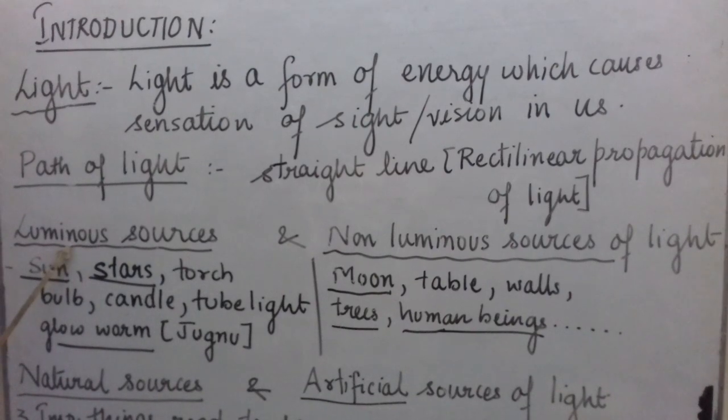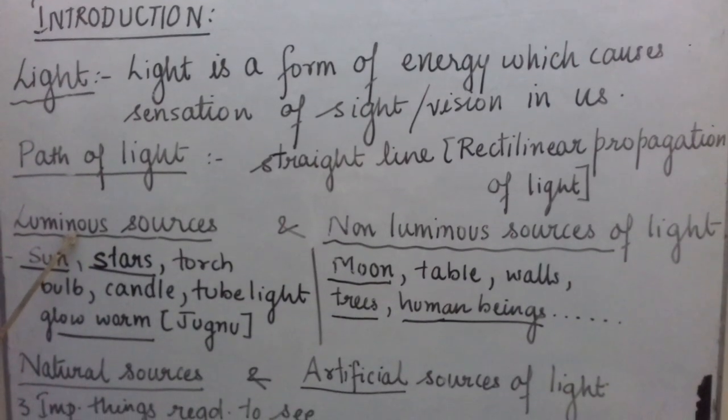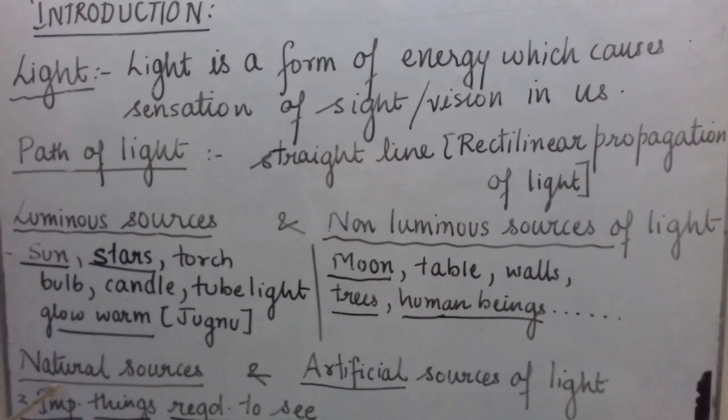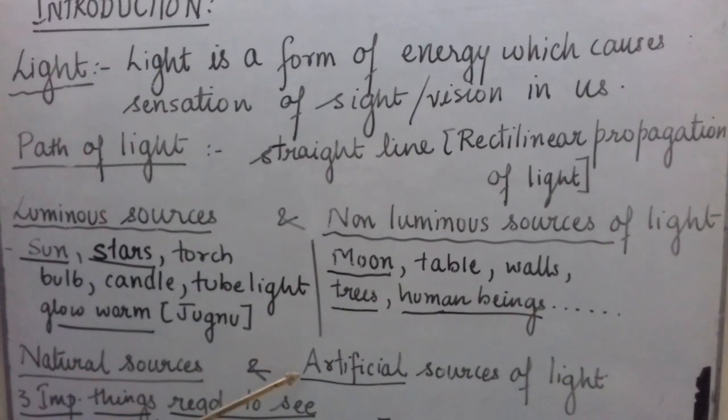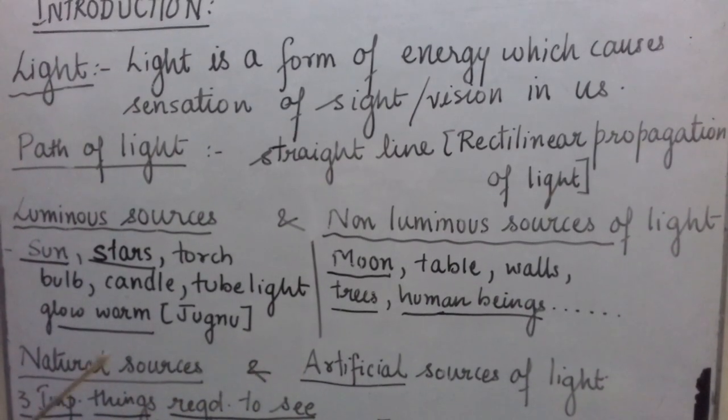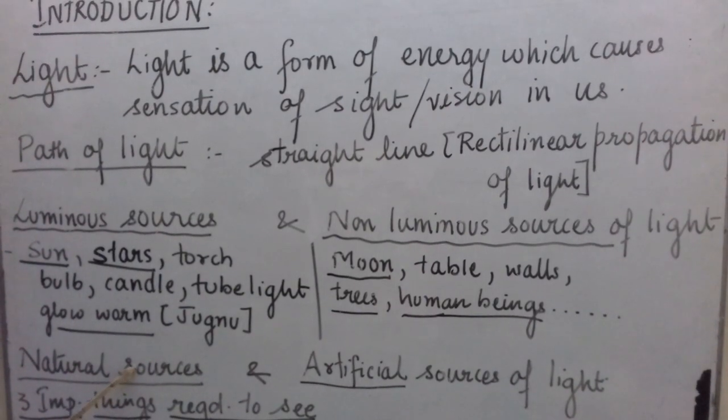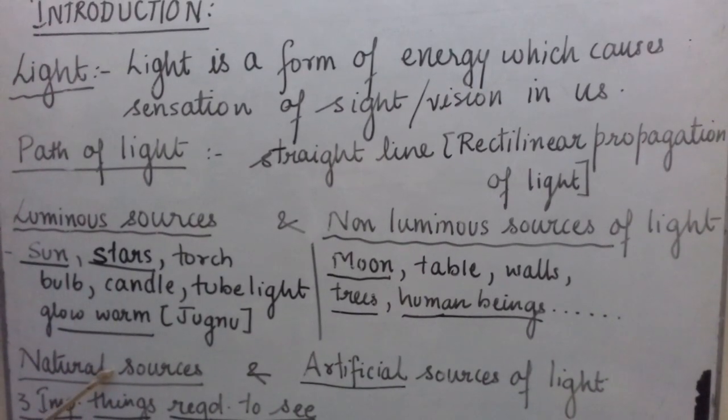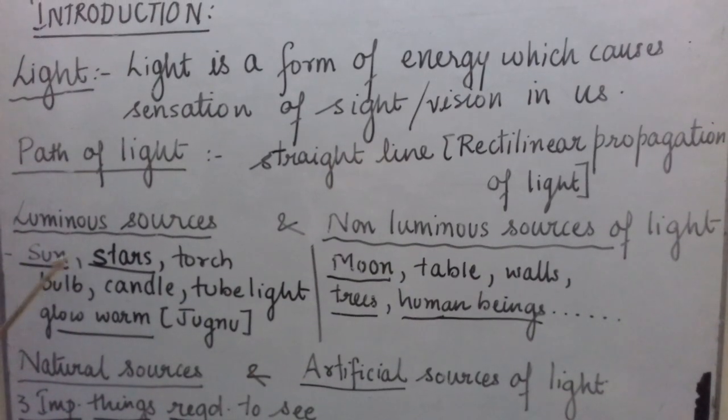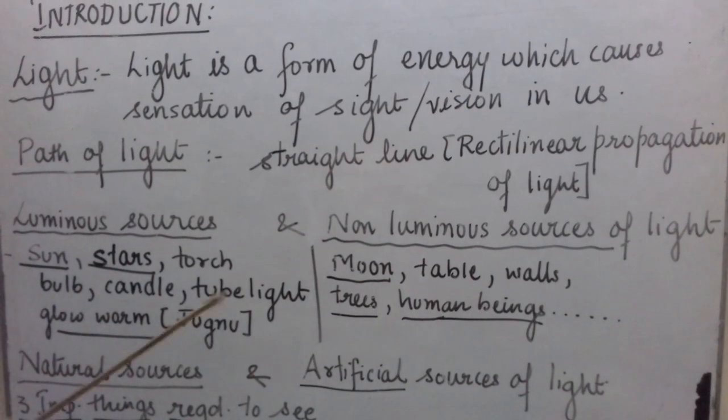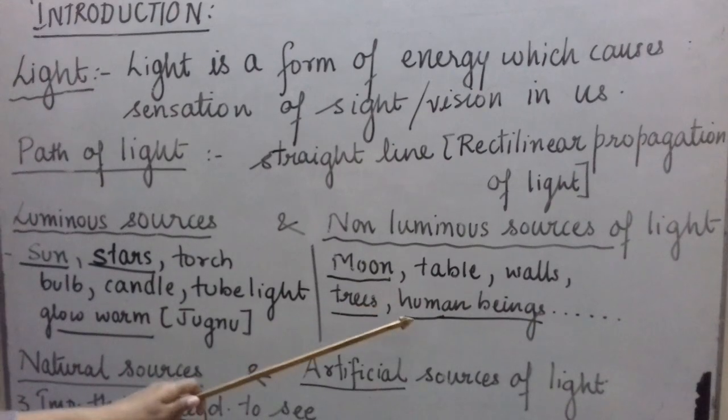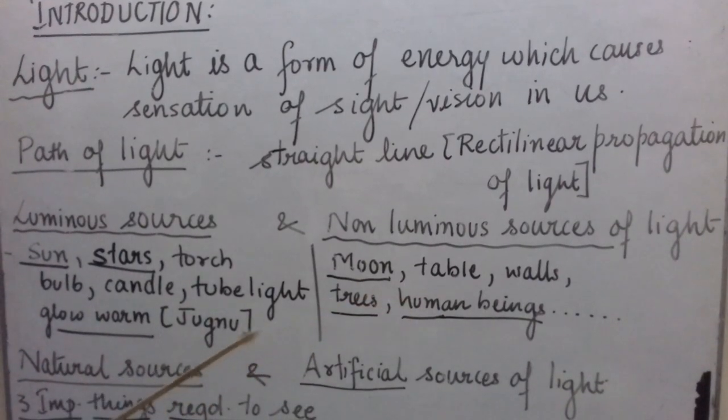There is another way of classifying all the sources of light into two different categories: natural sources of light and artificial sources of light. Natural sources of light, as the name suggests, are the sources of light which are available in nature.